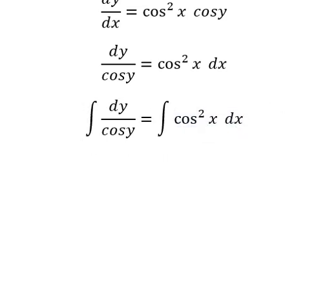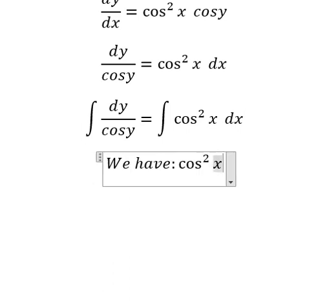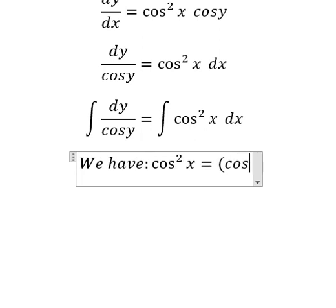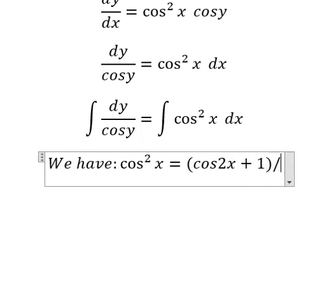Next we have the formula: cosine squared x equals cosine 2x plus 1 over 2.